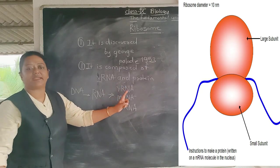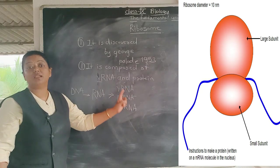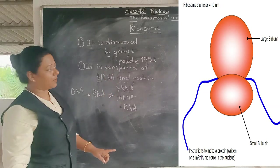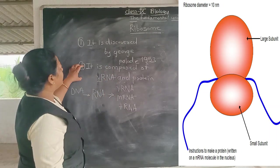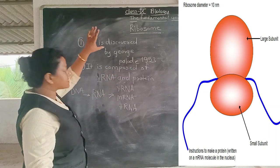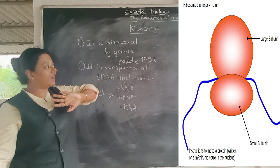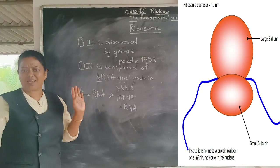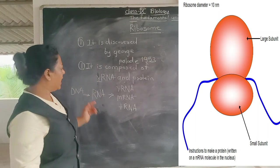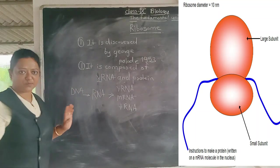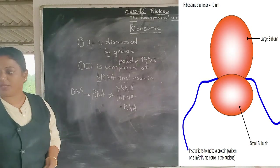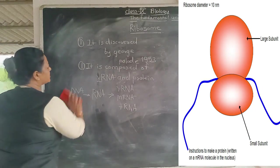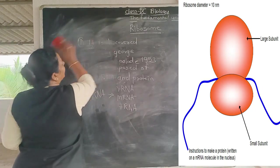The ribosome is composed of ribosomal ribonucleic acid (rRNA) and protein. It was discovered by George Palade. Now let us talk about the occurrence and structure of the ribosome.